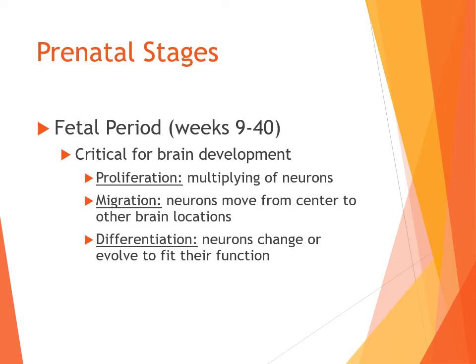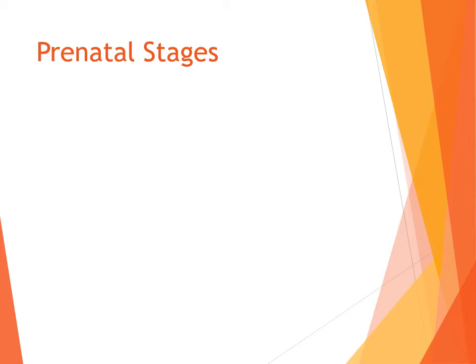For example, a neuron that develops in the center of the brain and moves toward the occipital lobe will adapt to that lobe's purpose of gathering and conveying visual information. Neurons also rapidly develop the myelin sheath — a protective covering that helps information transmit more quickly — which is very important for fast information transmission between neurons.